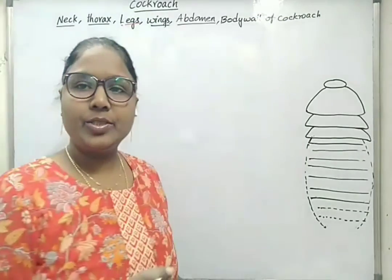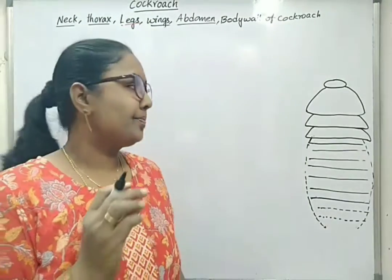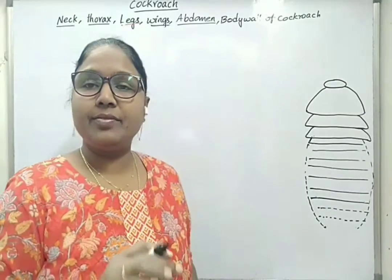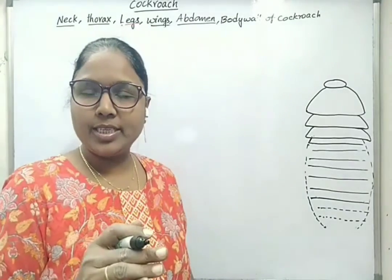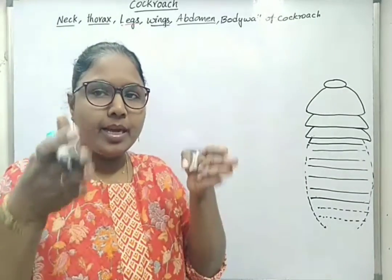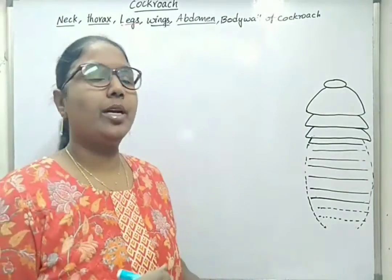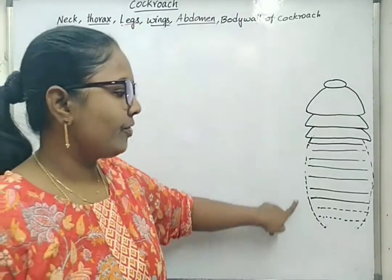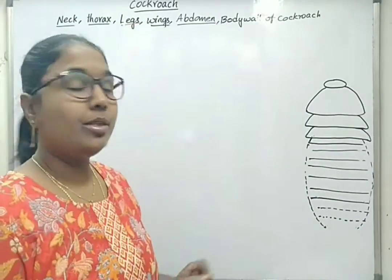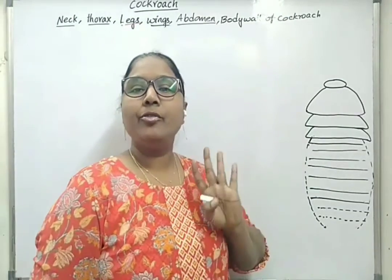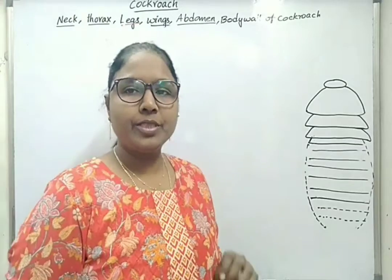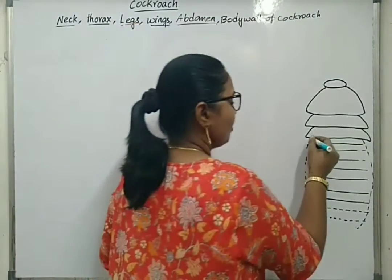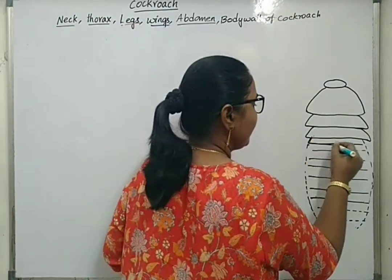We have seen that in case of thorax, each segment is covered by dorsal tergum, ventral sternum, and lateral pleura. In the same way, in case of abdomen also, each segment is covered by four number of sclerites.